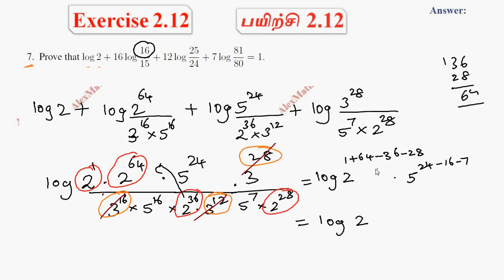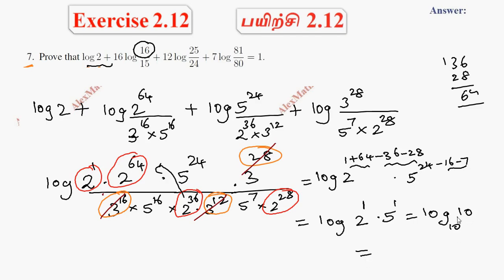So the total gives us log 10, which equals 1. The base is 10. If log and base are the same — by the rule log base a of a equals 1 — so log base 10 of 10 equals 1. This is the right-hand side, and hence proved.